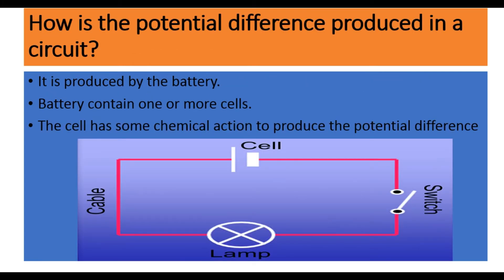Now we see how the potential difference is produced in a circuit. Here our circuit has a cell, switch, lamp, and cable — cable means the wires; the lamp gives light. The potential difference is produced by the battery. A battery is one or two cells — it is called the battery. So it is produced by the battery. A battery contains one or more cells. The cell has some chemical action to produce the potential difference. So the source to produce the potential difference is the cell, which has some chemical action.